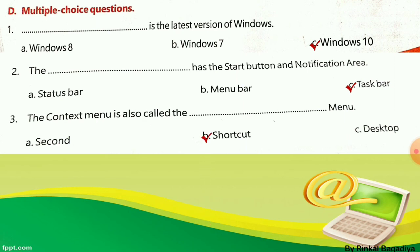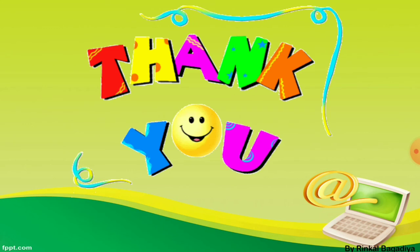Let's revise: Number 1, answer is option C, Windows 10. Number 2, answer is option C, taskbar. Number 3, answer is option B, shortcut. Our textbook exercise is now completed. Question E — answer the following questions — we will write as per our tradition in our notebook, and I will send that to you next class. Till then, stay safe. Goodbye.